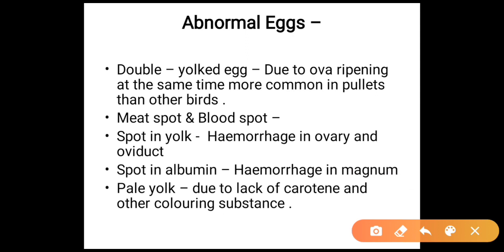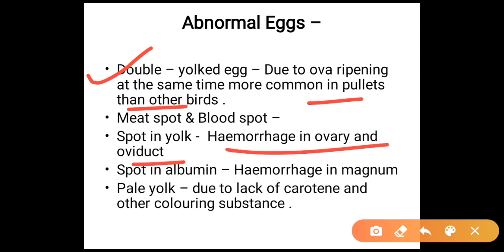Abnormal eggs: double yolk eggs are due to over-ripening at the same time and are more common in pullets than other birds. Meat spots or blood spots in the yolk may be due to hemorrhages in the ovary or oviduct. Spots in the albumin are mainly due to hemorrhages in the magnum. Pale yolk may be due to lack of carotene and other coloring substances.